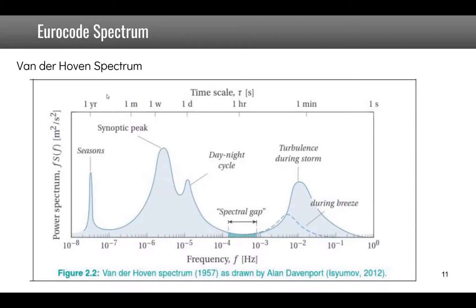It is interesting to note that in 1957, Van der Hoven described the whole spectrum of wind at different timescales. There are timescales related to seasons, the synoptic peak around one week, and day-night cycles around one day. What we are looking at here in the turbulent wind is more around one minute. This is the type of spectrum we want to describe to study the response of structure due to turbulent wind.